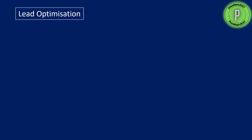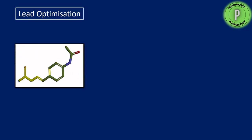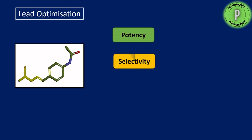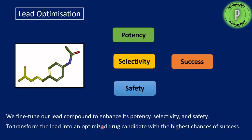So what is lead optimization? When you take a lead molecule, you bring about changes in functional groups or in the side chain — modifications in order to increase its potency and selectivity — so that you can get a successful drug. We fine-tune our lead compound to enhance its potency, selectivity, and safety. This transforms our lead into an optimized drug candidate with the highest chances of success.